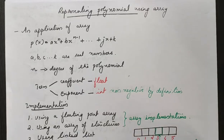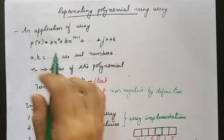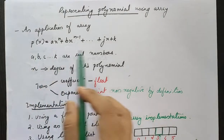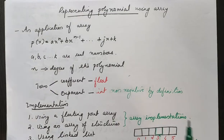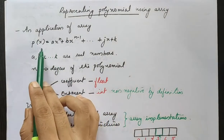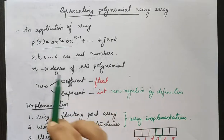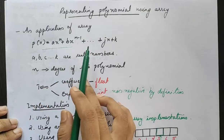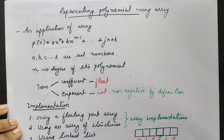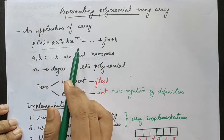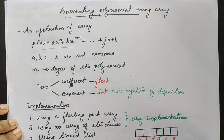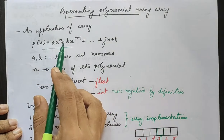Representation of Polynomial. In this video, we cover polynomial representation using array, which is an application of the data structure array. A polynomial has the format where a, b, etc., k are real numbers — that is the polynomial's definition — and n is the degree of the polynomial.